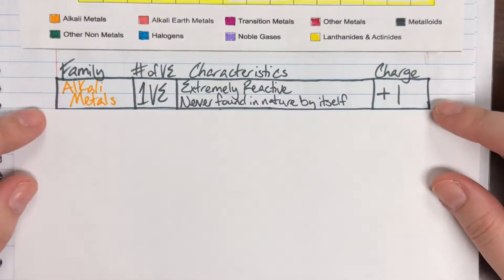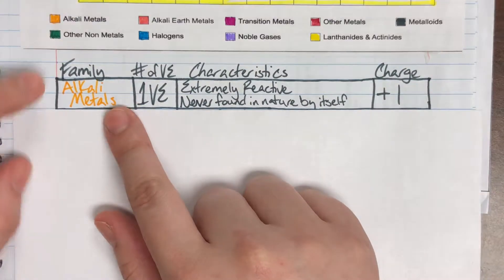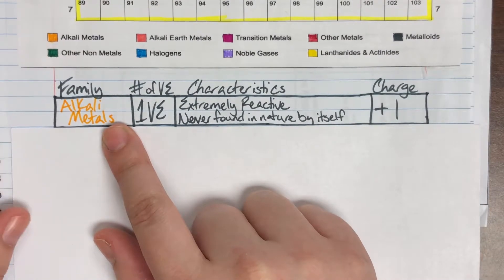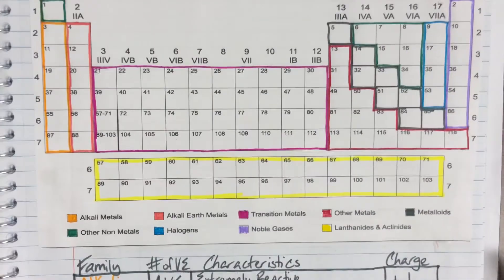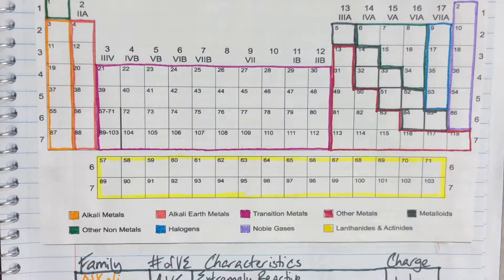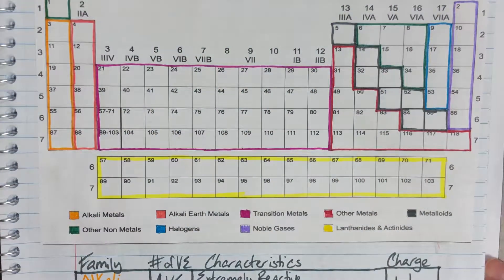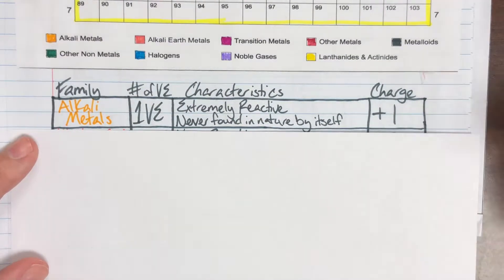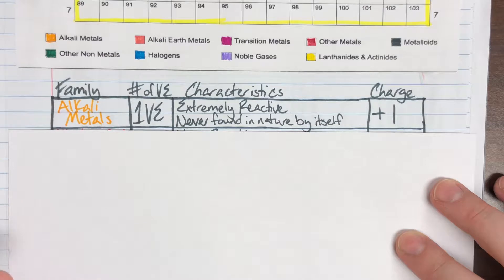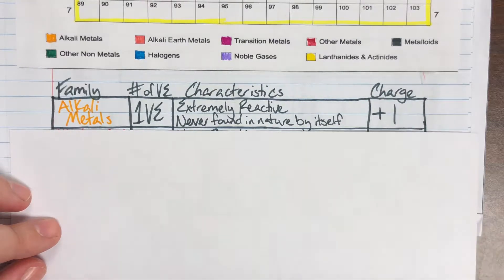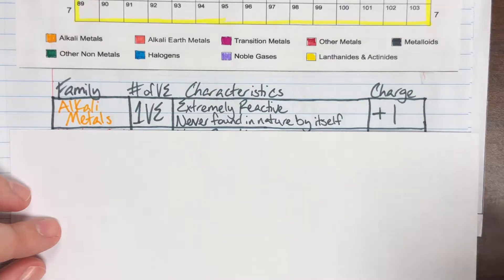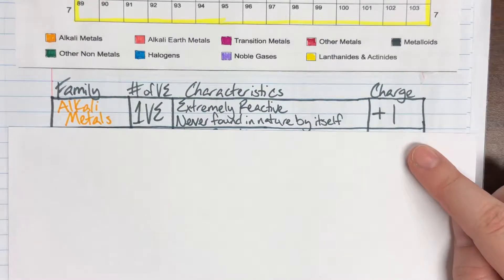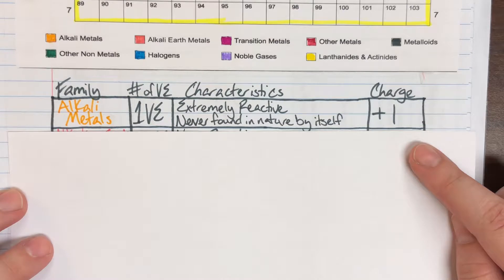The first family we're going to talk about is alkali metals. Notice that I have it the same color as from the table. Alkali metals are in the very first column, group 1A, so they have one valence electron. They are extremely reactive and because of how reactive they are, they're never found in nature by themselves. Since they have one valence electron, very far from the optimal 8, they donate one electron, giving them a charge of +1 because giving a gift is a nice thing to do.